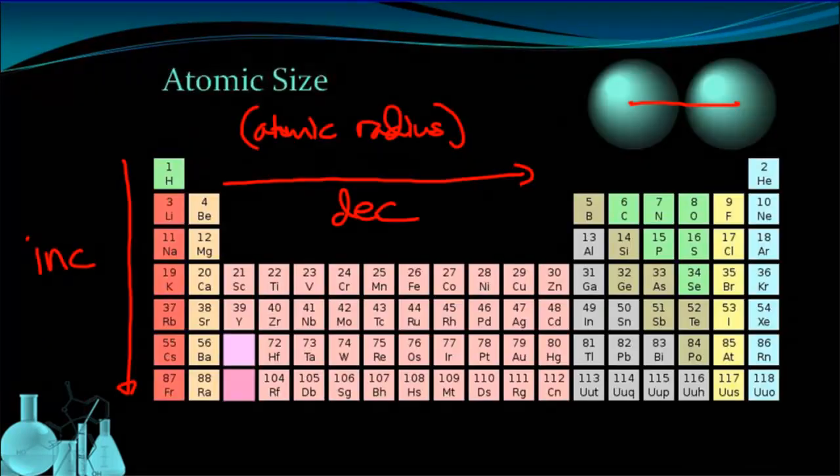First up is atomic size. Atomic size increases as you go down a group because you're adding on an entirely new principal energy level. So that expands the physical distance of the electrons away from the nucleus. That's pretty straightforward. But the reason that it decreases as you move across has more to do with this idea of Z-effective. So what happens is this. As you move across a period, so let's take period 3 for example. We go from sodium to magnesium to aluminum, so on and so forth.